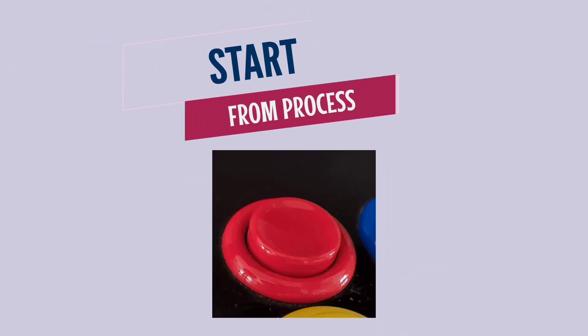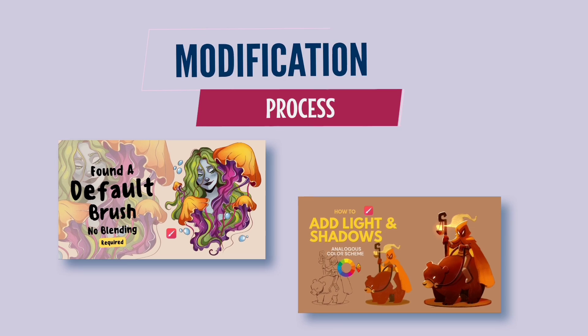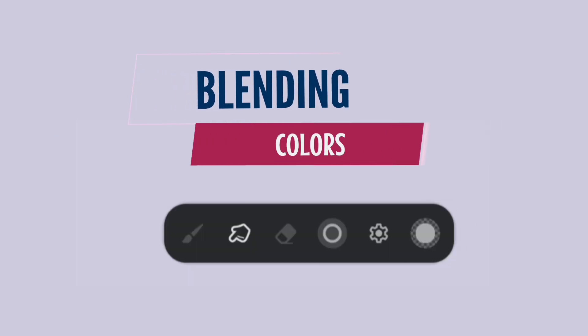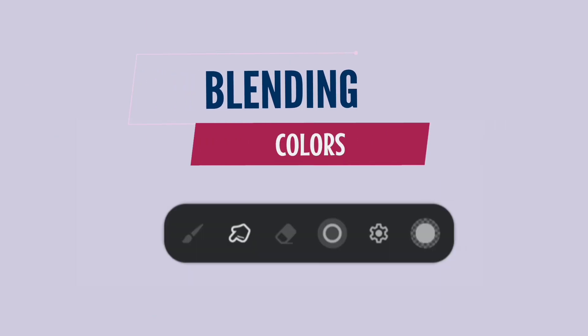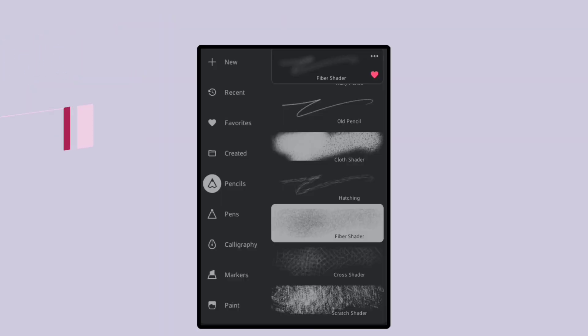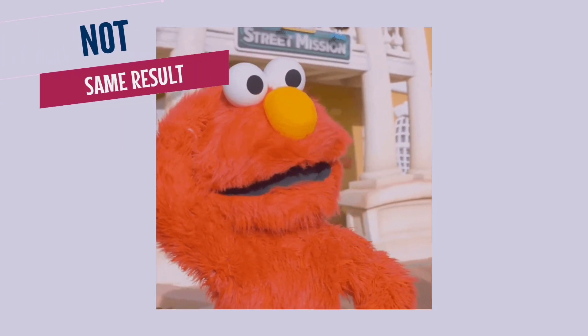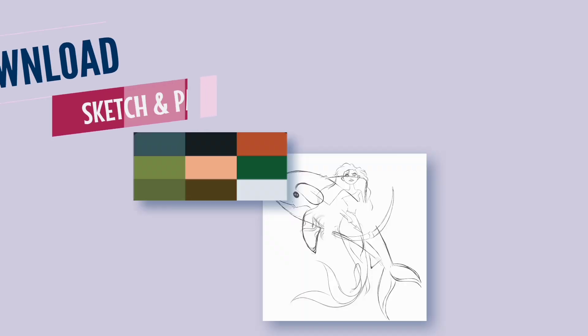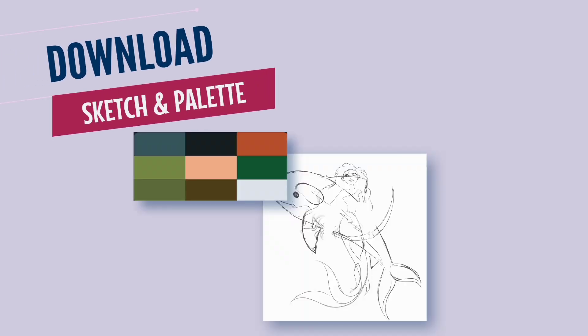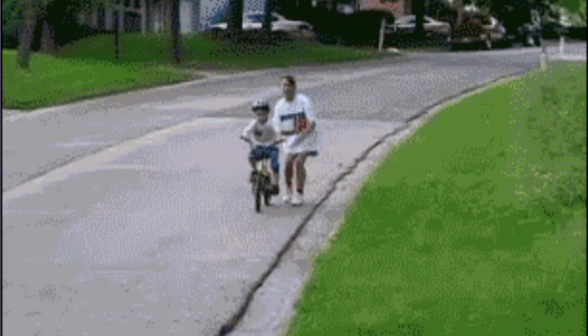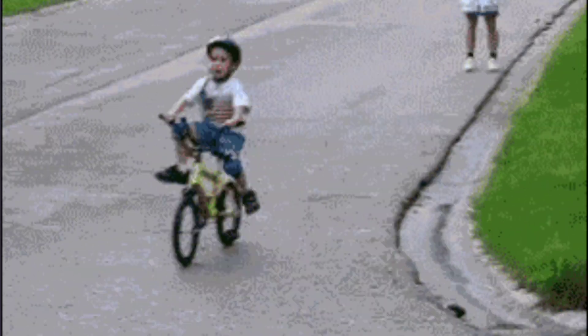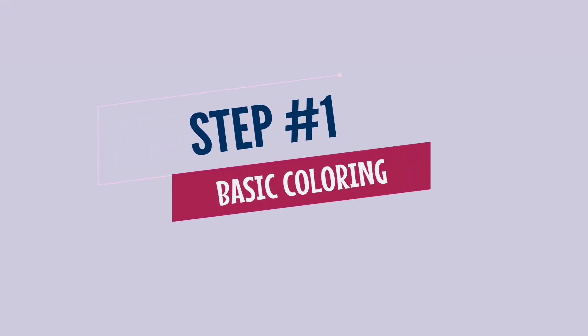Both of these brushes are modified. If you don't know how to modify them, you can check out the links in the description below — the video would start from the modification process. For blending colors we're gonna use only one brush as a blender, which is the modified Fiber Shader. Without modified brushes you can't have the same result as I get. There's also a bonus gift — you can download a sketch and color palette for free. Let's move on to our first step: basic coloring.